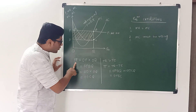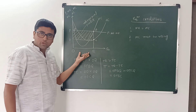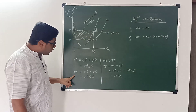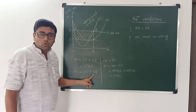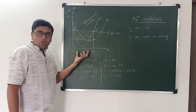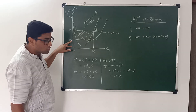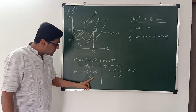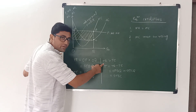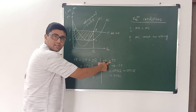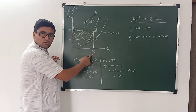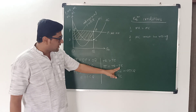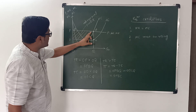Total revenue is OP into OQ, which equals OPBQ. Total cost is average cost into quantity. The average cost of OQ is CQ, which is exactly equal to OD. So total cost is OD into OQ, which equals ODCQ. Total revenue OPBQ is higher than total cost ODCQ, so if we subtract total cost from total revenue we get profit which is DPBC.